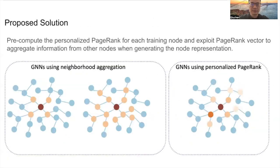We propose a decoupled GNN with a differentially-private approximate personalized PageRank for training GNN models, which can provide strict node-level differential privacy guarantees. Our framework is based on the decoupled GNN training algorithm published in 2020 by Bojchevski et al., originally designed to scale up training for large graphs. Our main insight is that this decoupled strategy can be utilized to improve the design of DP algorithms by capturing the most important neighbors for each node and avoiding expensive privacy cost accumulation from layer-wise message passing. Our framework achieves an enhanced privacy-utility trade-off compared to layer-wise aggregation-based methods.